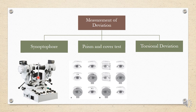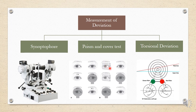With the prism bar and cover test, you place the prism bar with the base opposite to the deviation and perform a cover-uncover test until no more movement of the eye is seen. This is trickier and works best when only one muscle is affected; if more than one muscle is involved, you can only measure in one gaze at a time — either horizontal or vertical.